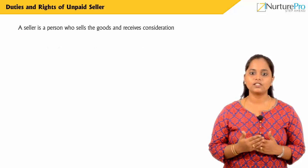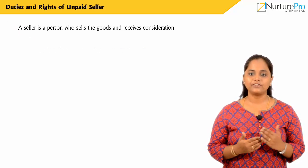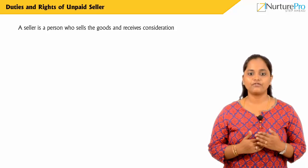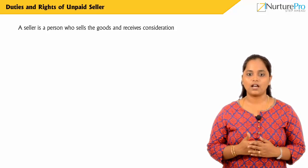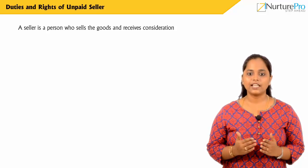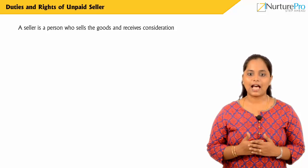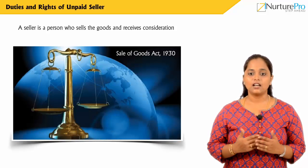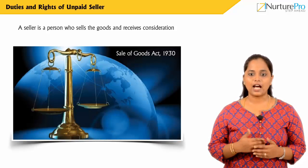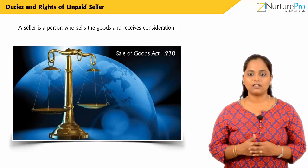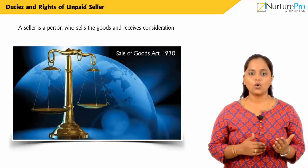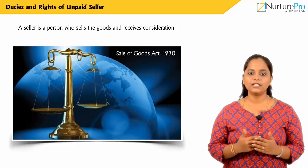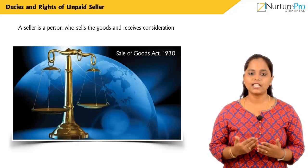According to Section 45-1 of the Sales of Goods Act 1930, a seller is said to be an unpaid seller when the whole of the price has not been paid or tendered.